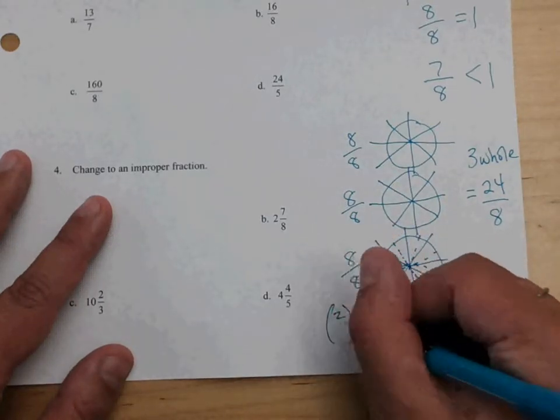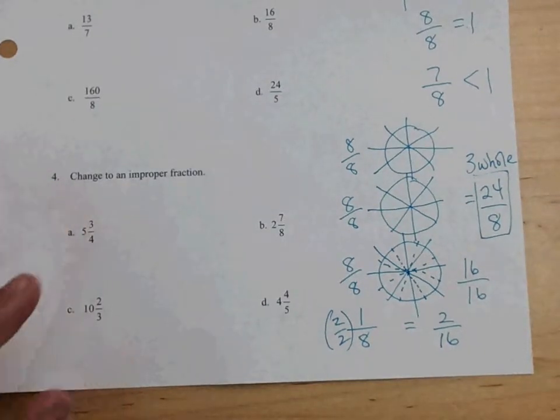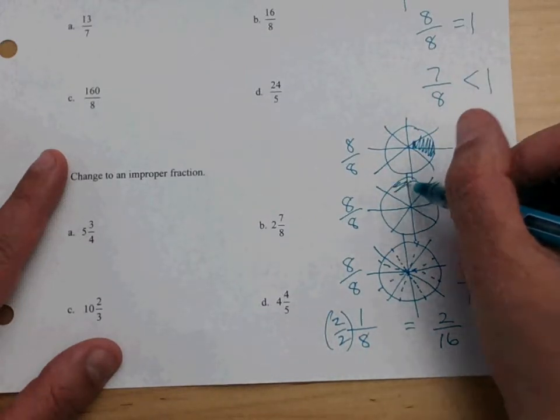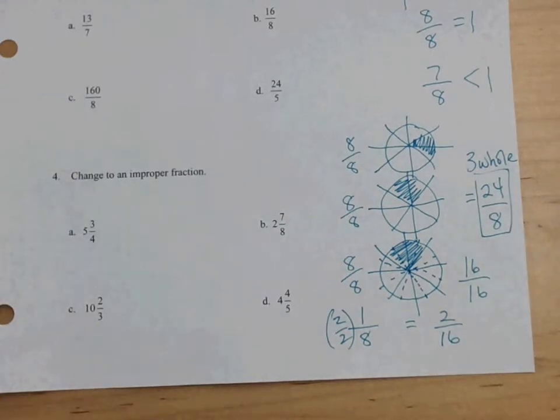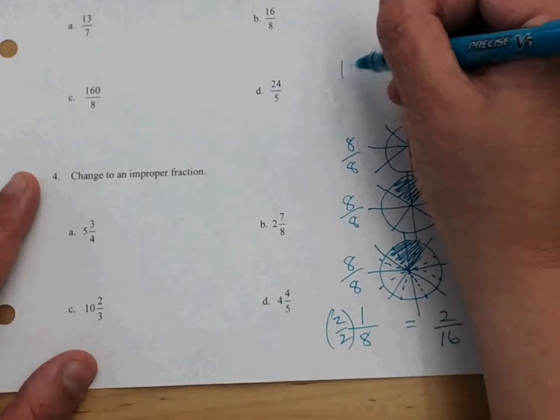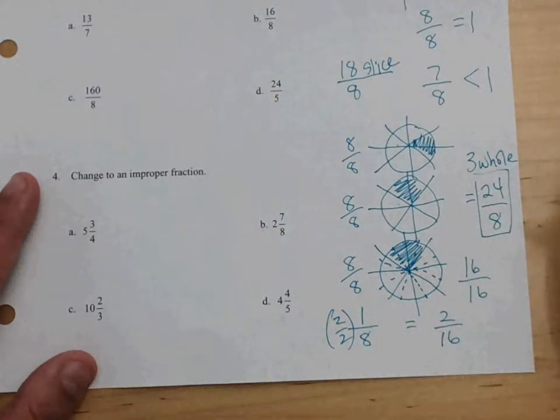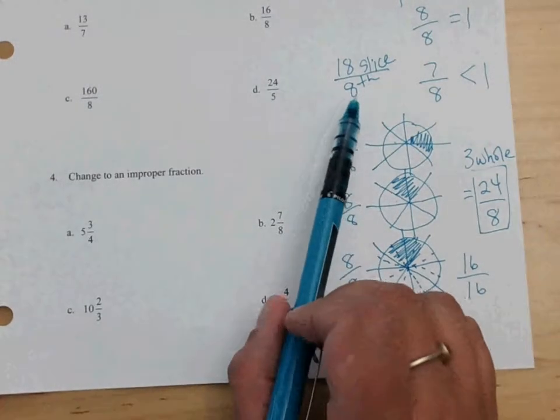But if I have an improper fraction, 24 eighths, now what if somebody comes along and eats some of the pizza? I had three different flavors of pizza. I want to know how many pizzas I have left. Let's say they ate some of these slices. Two are gone, two are gone from this one, four are gone from here. How many do I have left? I want to know how many whole pizzas I have left. I have six, six, six. Six times three is eighteen. I have eighteen slices that are all size eighth.